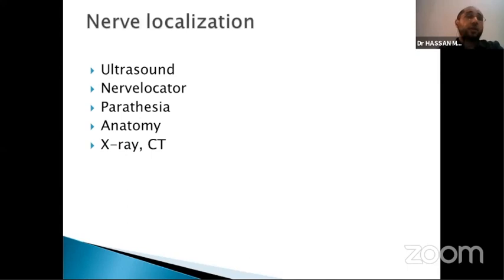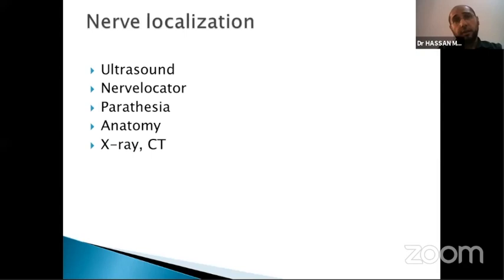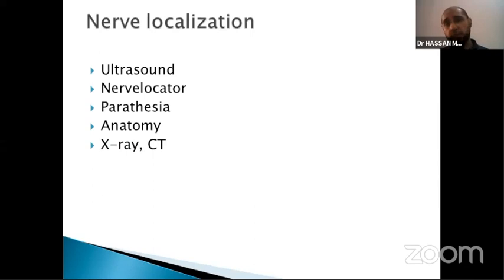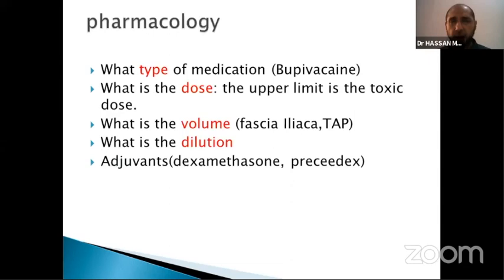Nerve localization — another station. There are many techniques. The most commonly used now is ultrasound, which is established as the definitive way of locating the nerve. In the old days there was a nerve stimulator, paresthesia technique, anatomical landmark, and even X-ray or CT. You should know the history of nerve blocks — how to locate by anatomy, X-ray, paresthesia, or nerve stimulator. But now ultrasound is the mainstream and gold standard.